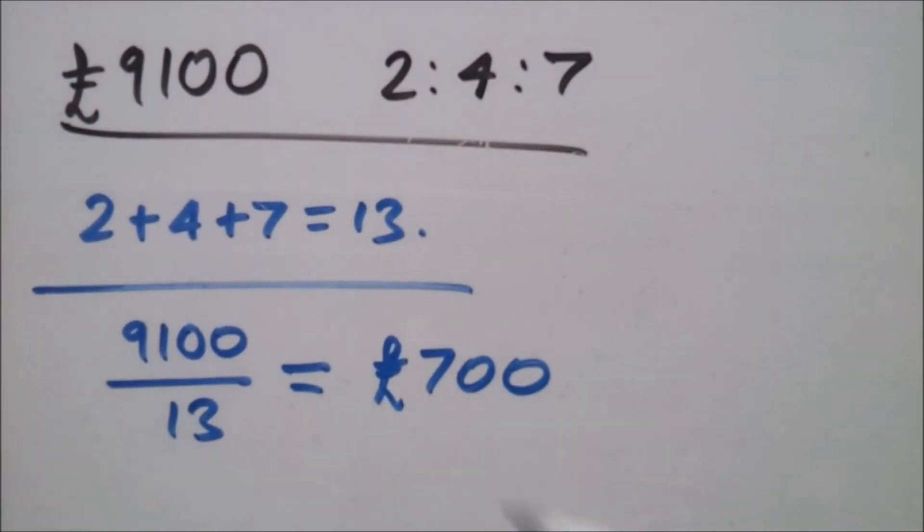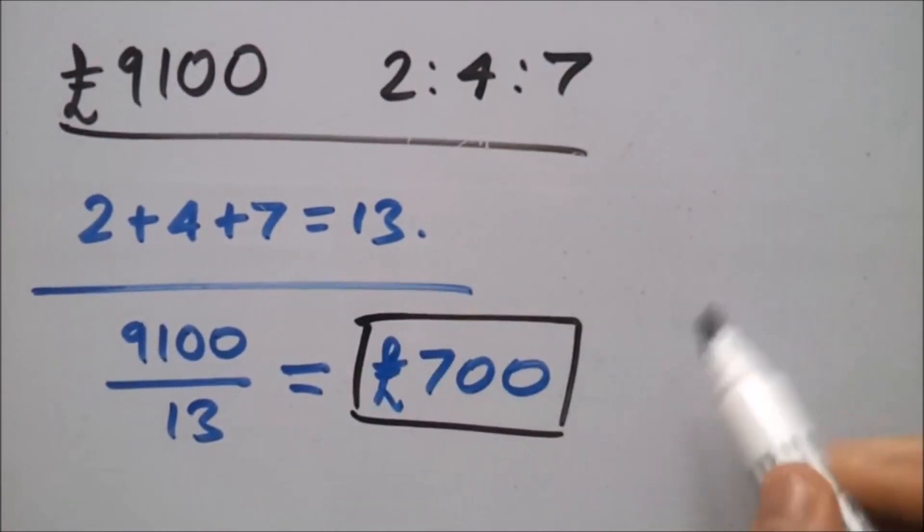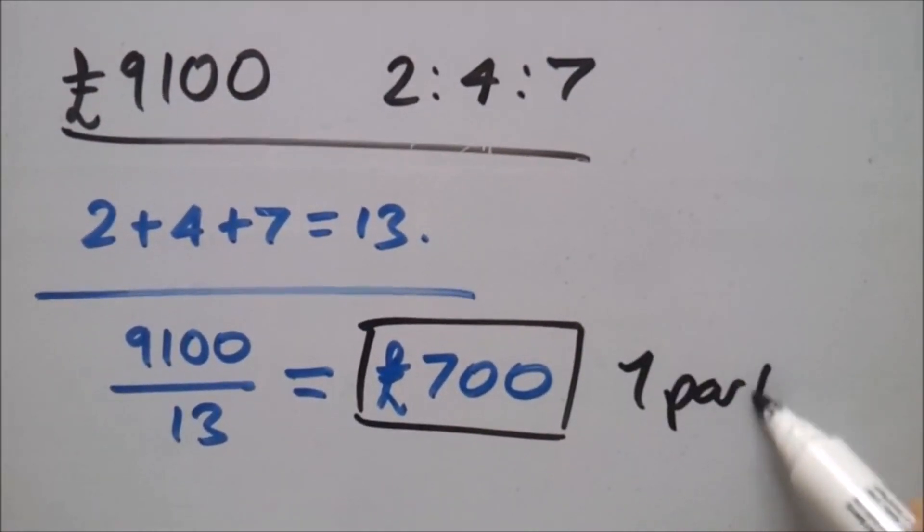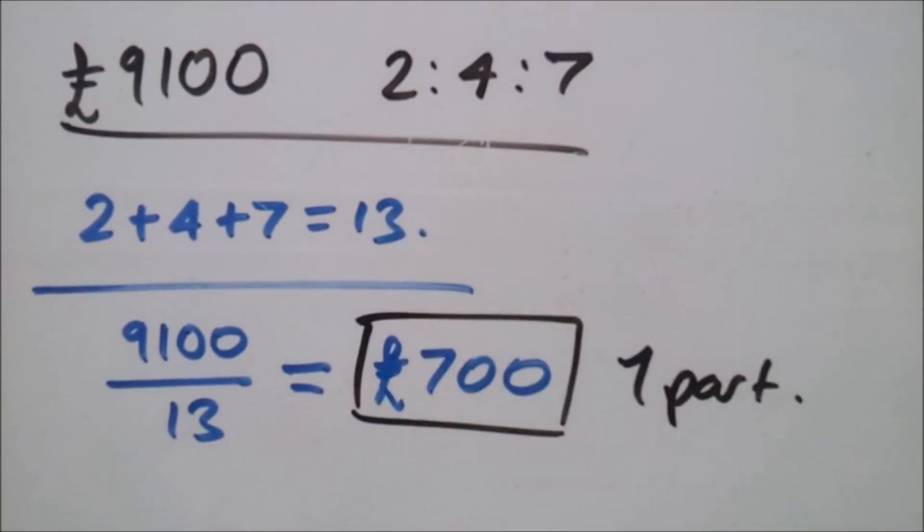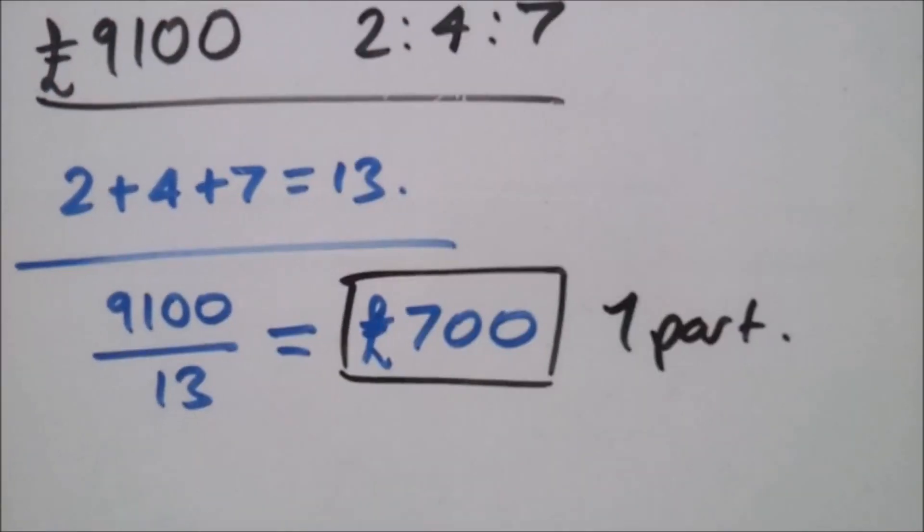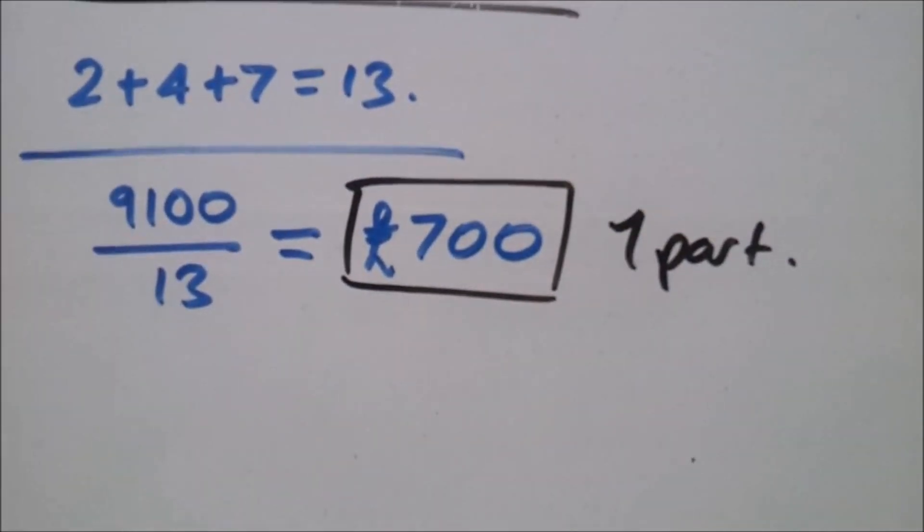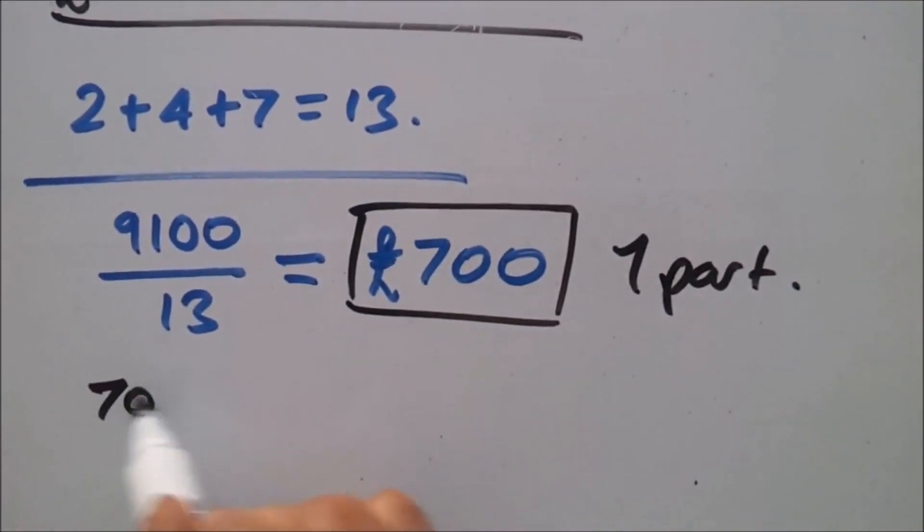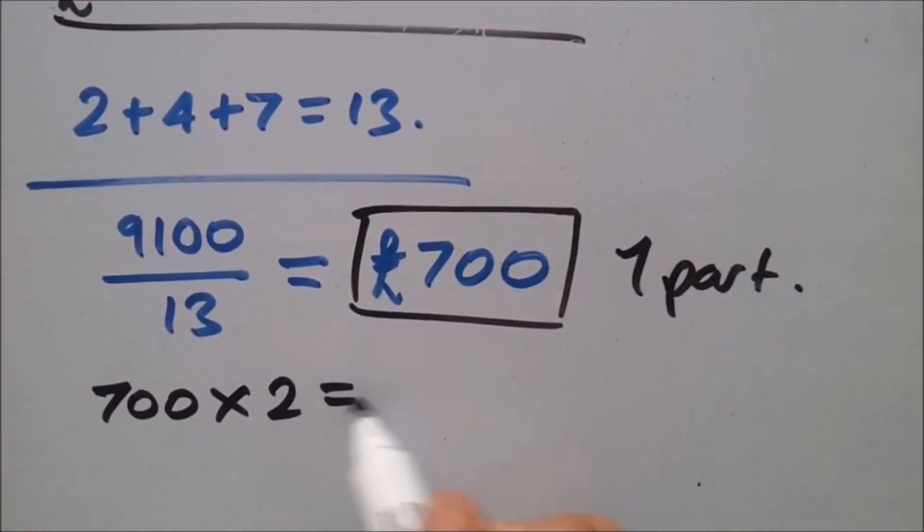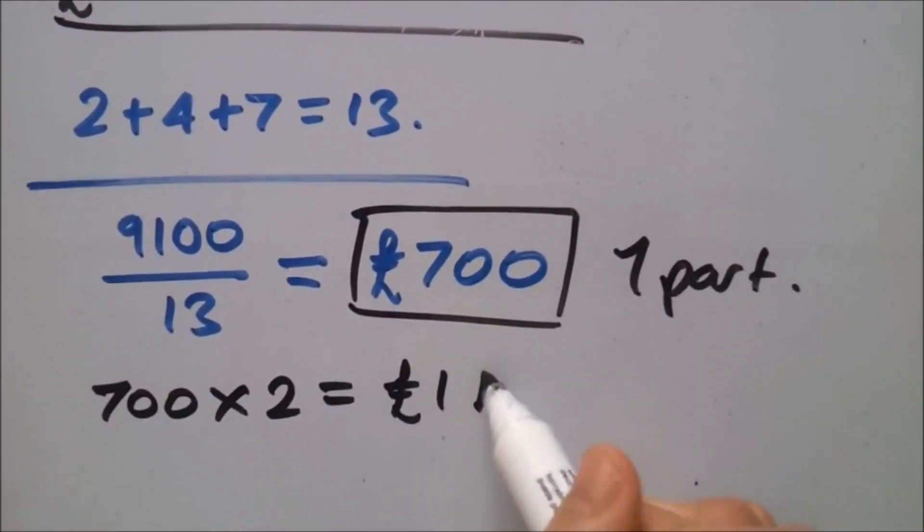So now this represents one part. The question tells us to find two parts, four parts, and seven parts. So, to find two parts, we need to do this number times it by two. So, 700 times 2 gives you £1,400.